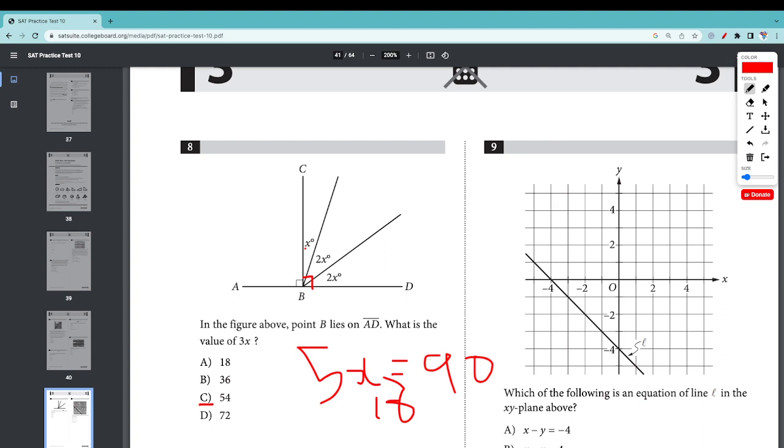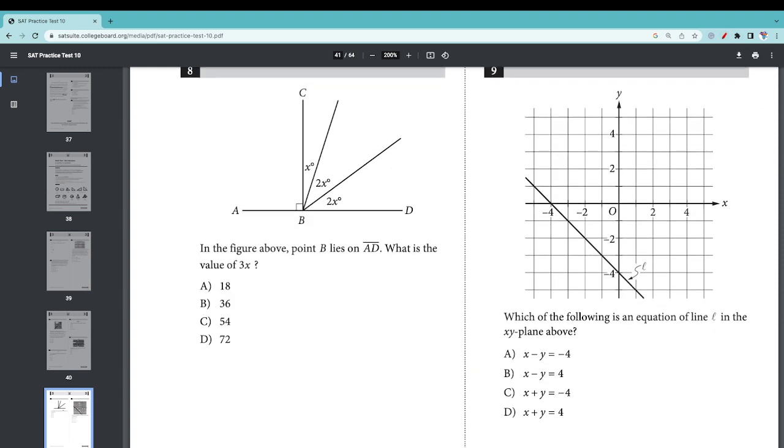Number nine: Which of the following is the equation of line l in the xy plane above? They're all dealing with negative 4, so I wonder what that's about. At the point where x is 0, y equals negative 4. So we can say that x plus y equals negative 4.